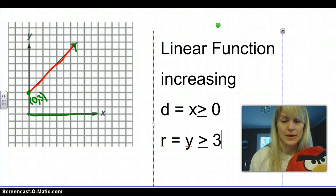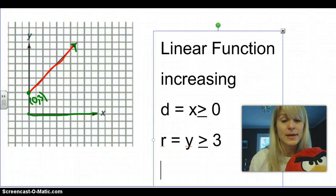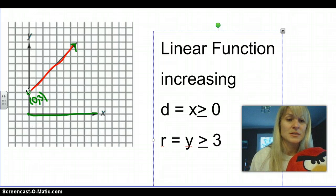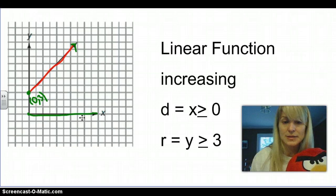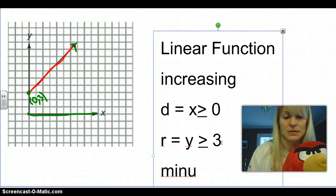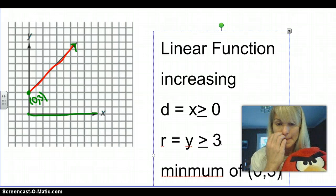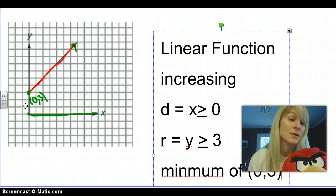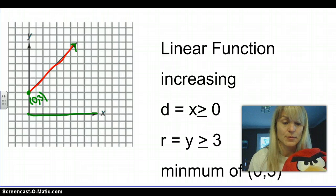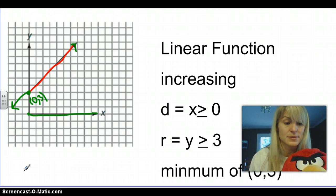The other thing we want to look at with this graph is if it has a maximum or minimum. Maximum means it has a point at the top that it will stop at, and minimum means it has a bottom value point. This one goes forever increasing, but it starts right here and doesn't go into the other part of the graph. So in this case, we have a minimum. The smallest value it has is (0, 3), because that is the bottom point. If the line just kept going forever to the right and to the left, we would say there's no maximum or minimum.